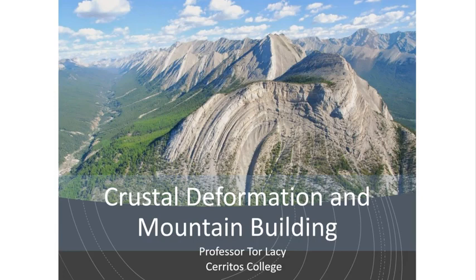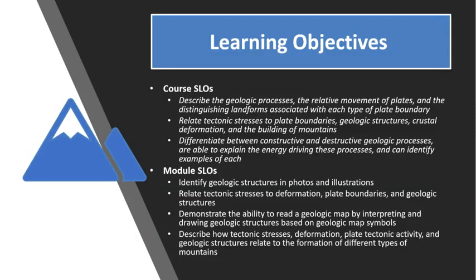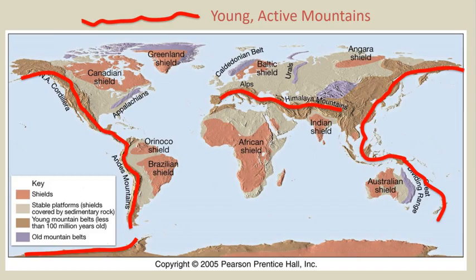Folded mountains form where the crust has been bent or folded upwards by tectonic stresses to create a mountain range. The geologically young mountains — those less than 100 million years old — are found along the margins of the continents surrounding the Pacific Ocean and along an east-west trending line through southern Asia and Europe.